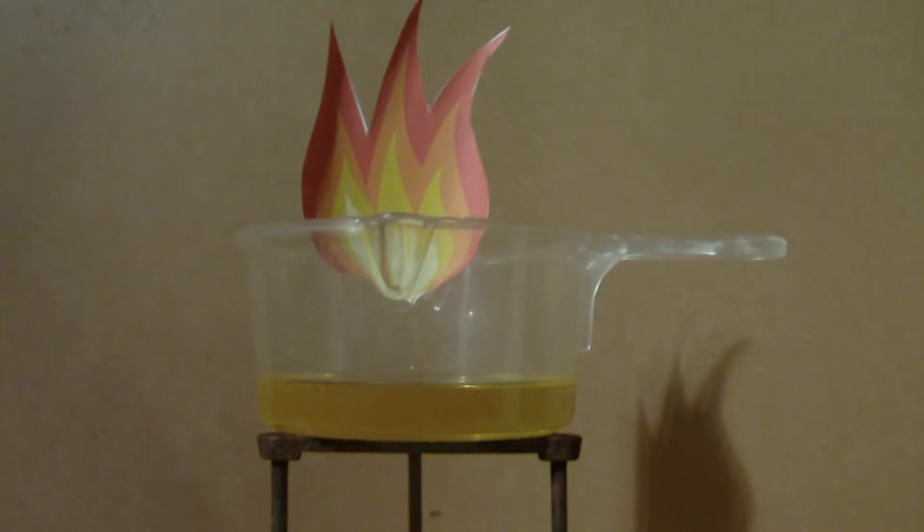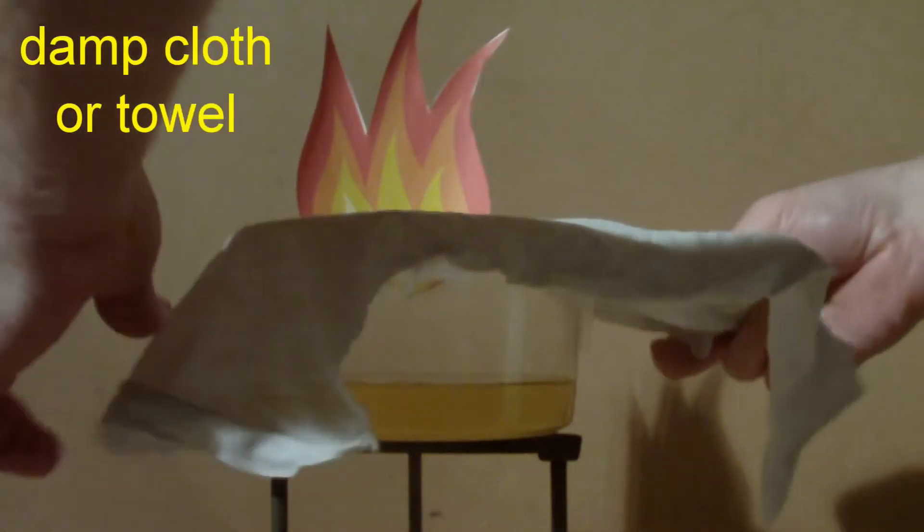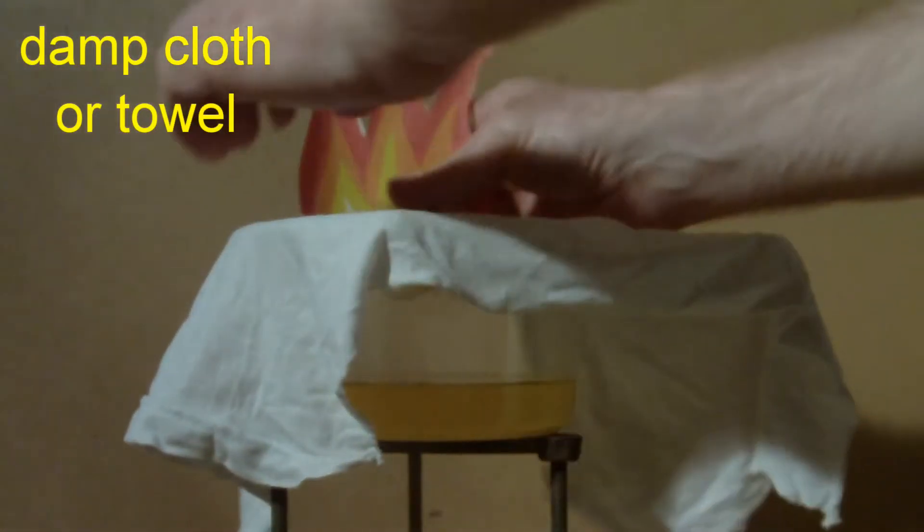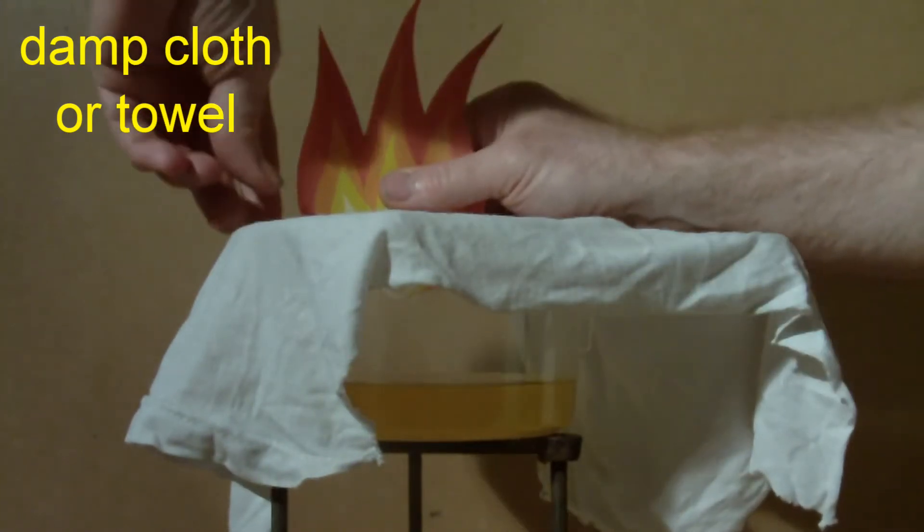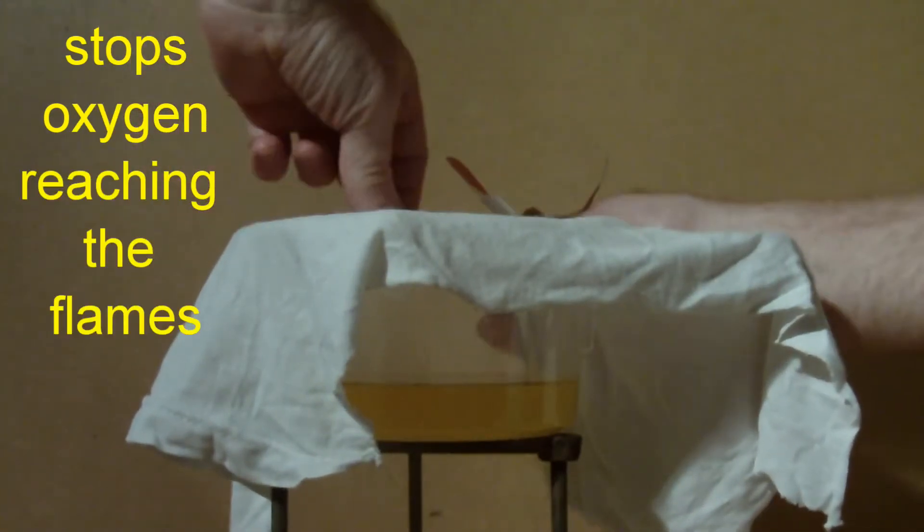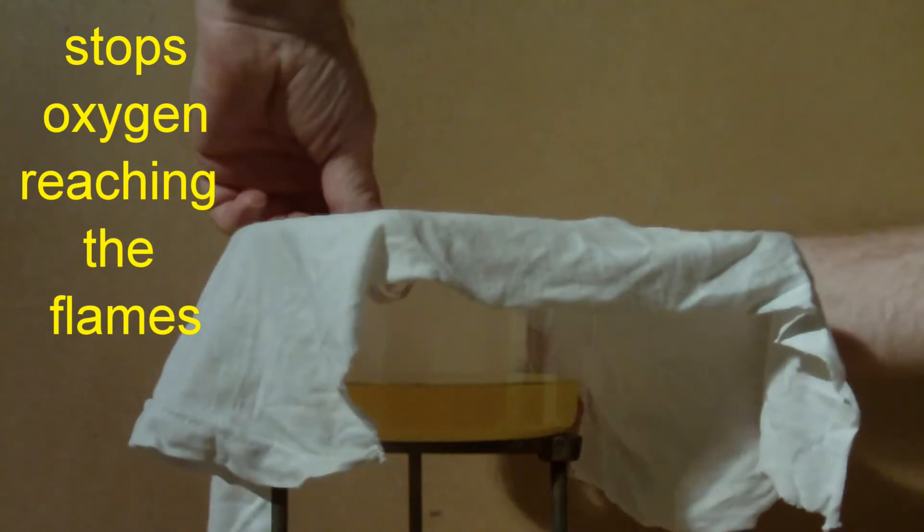So what we do is we cover the saucepan with a damp cloth like that. And that stops oxygen getting to the flames and causes the fire to go out.